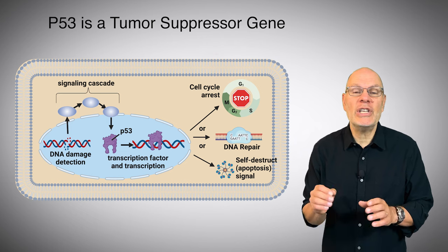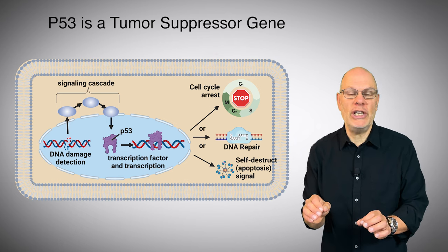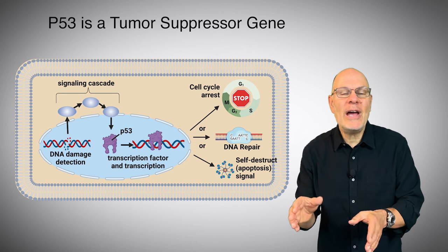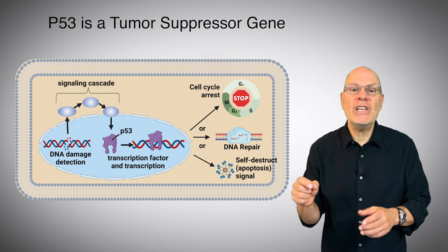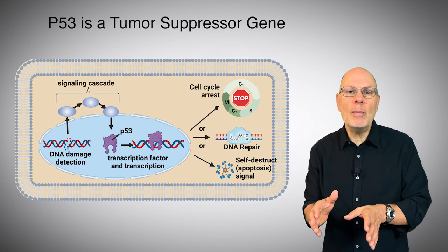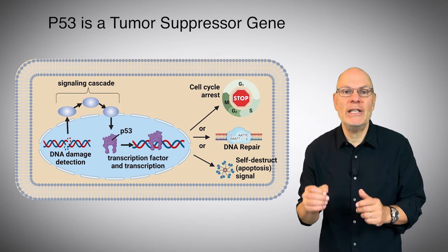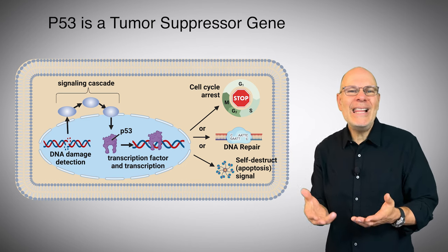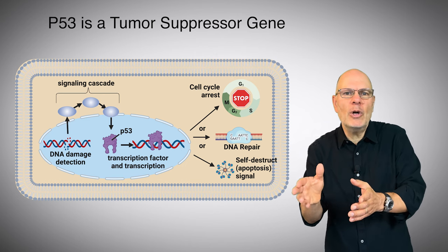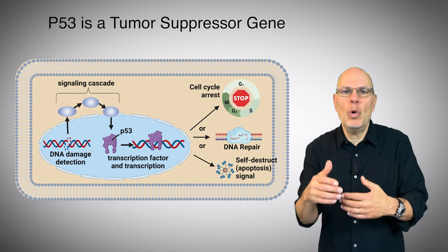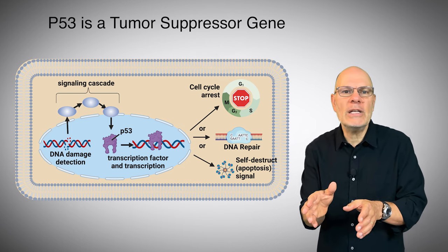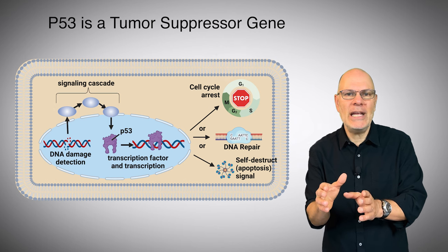The P53 gene is an example of a tumor suppressor gene. It produces a protein, also called P53, that is found inside the nucleus and plays several roles that protect the body from cancer. P53 is so important that it's called the guardian of the genome. Let's say that a cell experiences DNA damage — this could occur from an error during DNA replication or some mutation-causing agent, such as ultraviolet radiation.